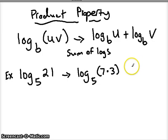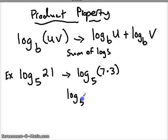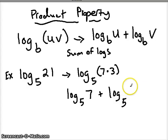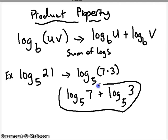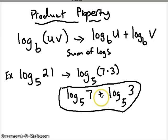So now that we have a product, we can rewrite it as the sum of two logs. We have log base 5 of 7 plus log base 5 of 3. We just rewrote that as a sum of logs — in other words, we used our product property to simplify that expression.